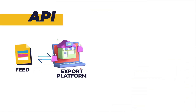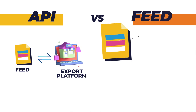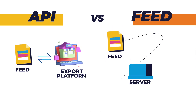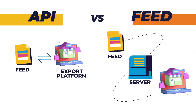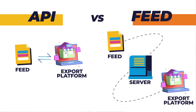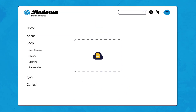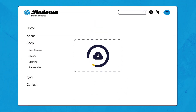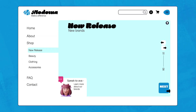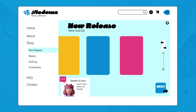The main difference to an API is that this process is only one-directional, meaning once the feed is pushed to our servers, we have no influence on what happens on the channel. We do not get any information back from the marketplace, but the marketplace just downloads the feed and creates listings with the information included in the feed.